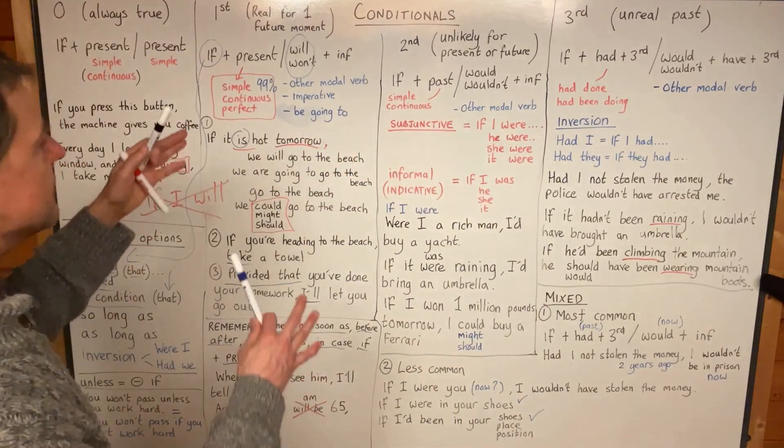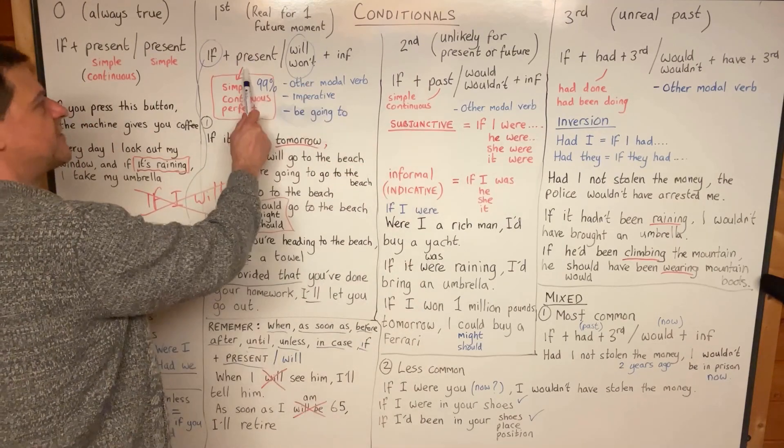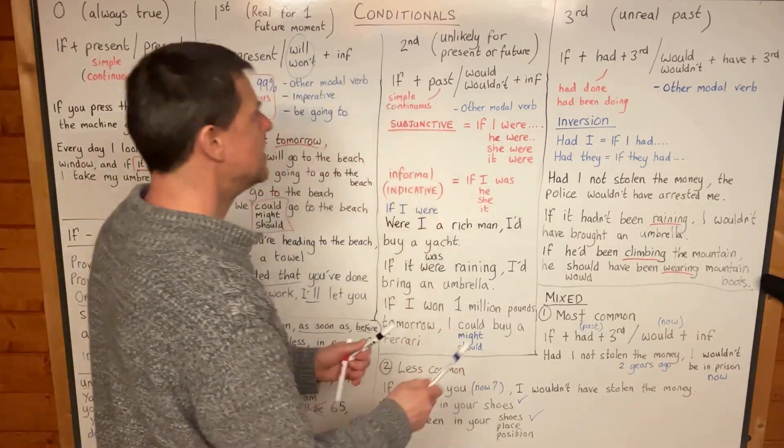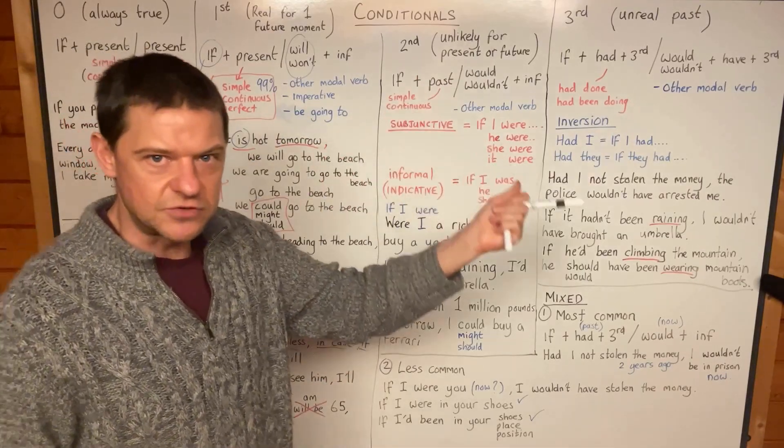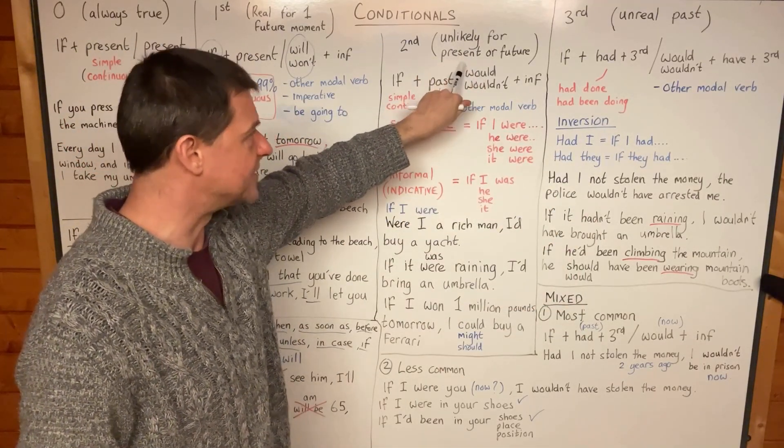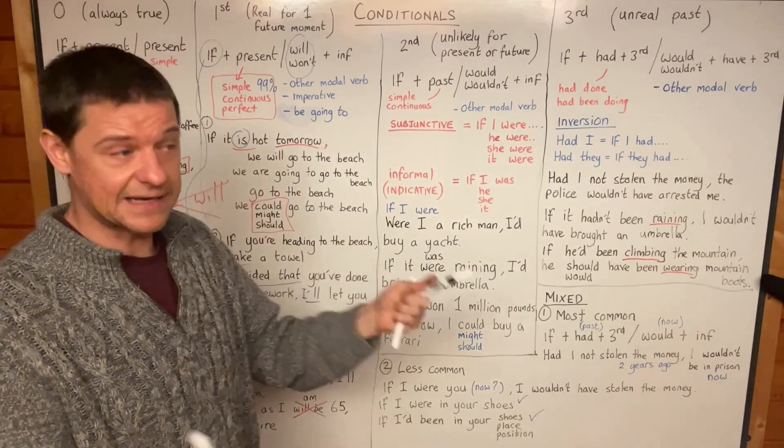Okay, so let's move further now to second conditional. What's the difference between first conditional and second conditional? Well, second conditional is for unlikely future events and present events, unlikely present or future, whereas first conditional is likely and real, it's likely to happen.